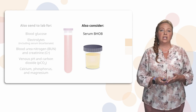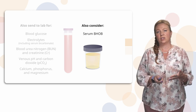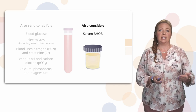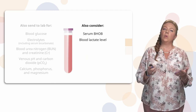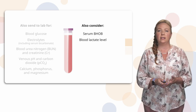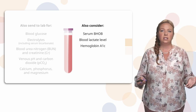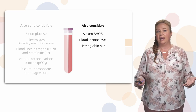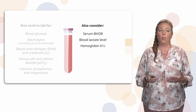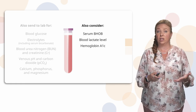If a serum beta-hydroxybutyrate isn't available, we can use urine ketones as a substitute. We might also send a blood lactate level if the patient appears very ill on presentation. If this is an established patient, we might send a hemoglobin A1c, which gives us an idea of whether the patient is well-controlled or not well-controlled in their diabetes on a daily basis.